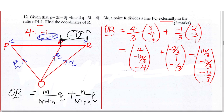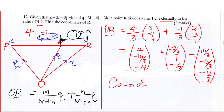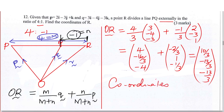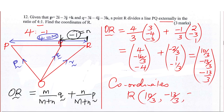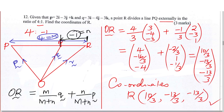To write the coordinates, we just use the column vector. The coordinates of R will be given by 10 over 3, negative 13 over 3, negative 13 over 3. And that is how you write the coordinates of R. That is simply how you're supposed to solve that question. Thank you.